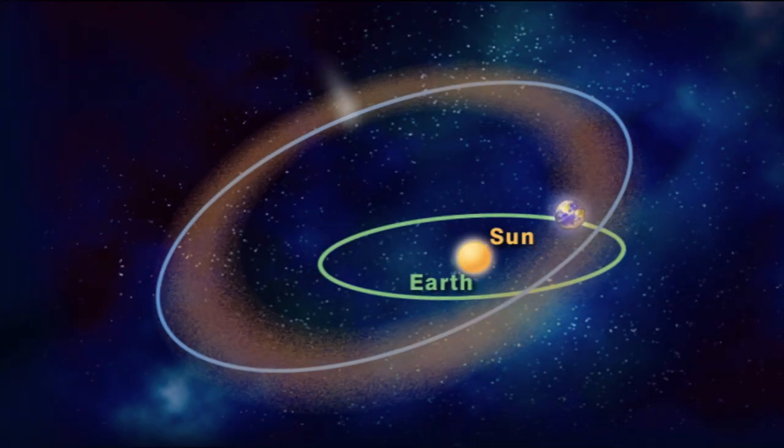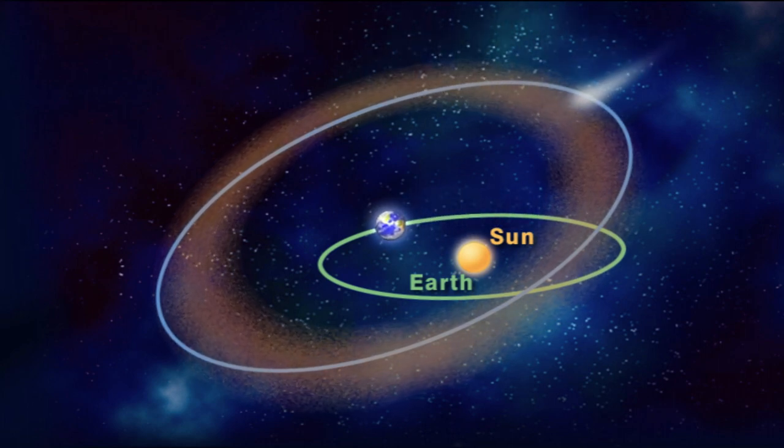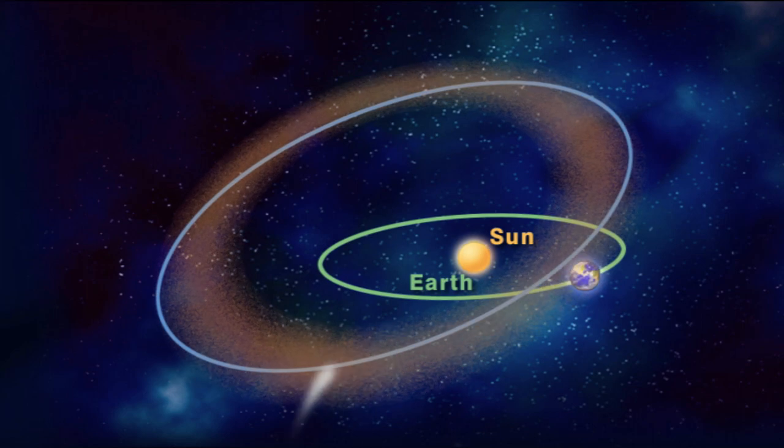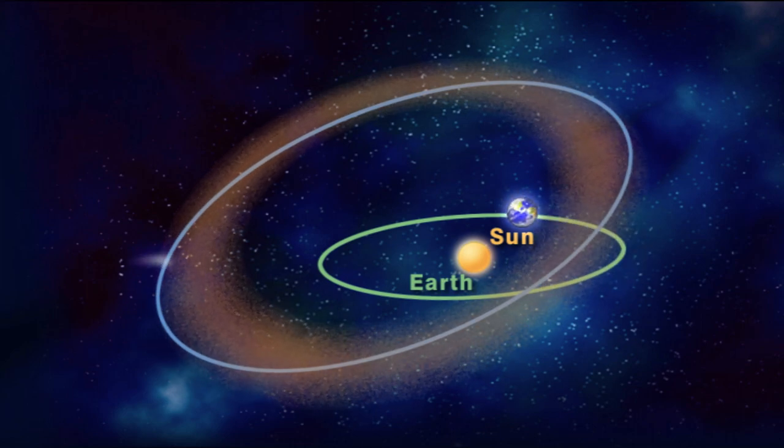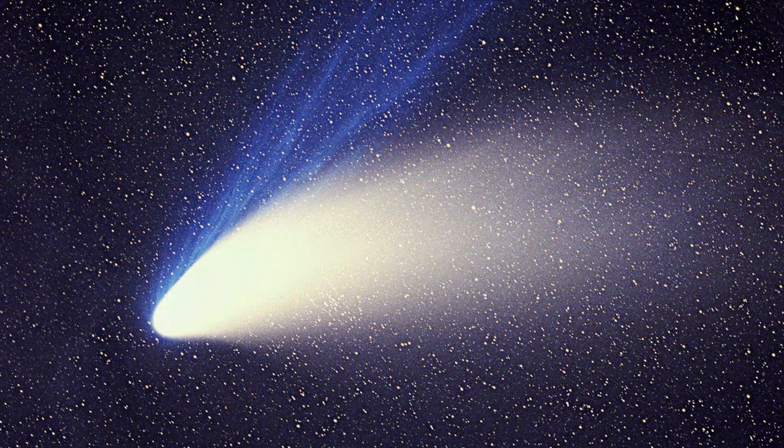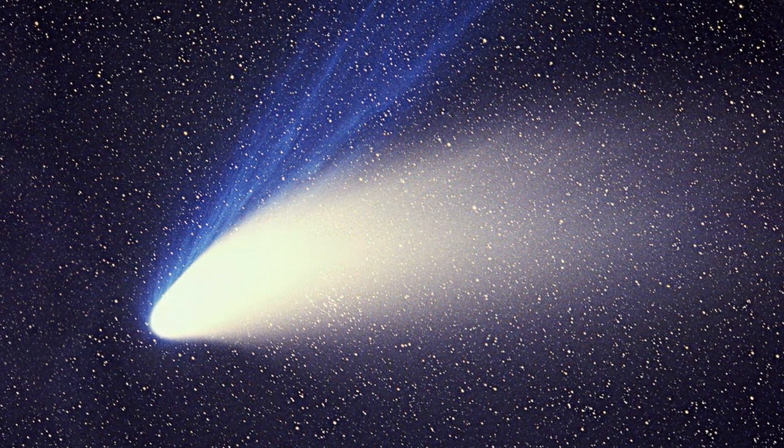Comets and asteroids are made of rock and dust and ice and gas. And as they approach the sun, bits of the comet or asteroid are heated and they start to burn away, leaving behind a tail. The tail is made of little bits of the parent body that it leaves behind in the orbit of the sun.